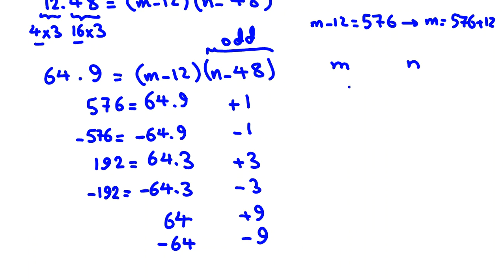12 plus 576 is 588, and 48 plus 1 is 49. So one answer is m = 588, n = 49.